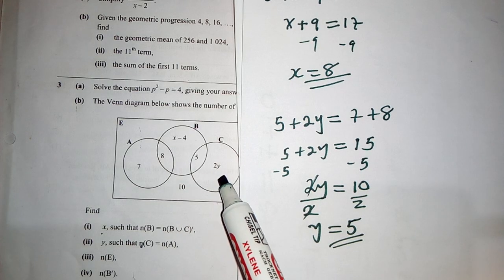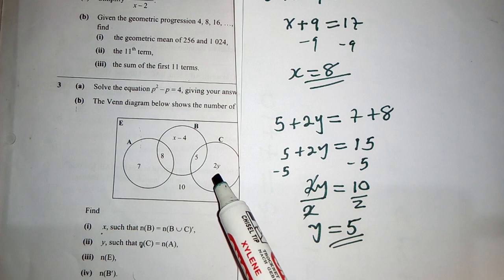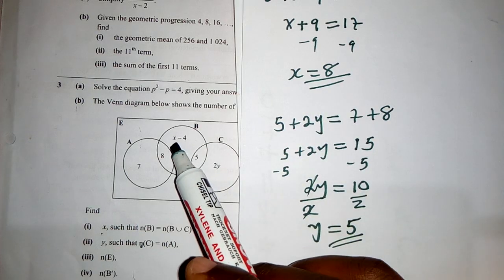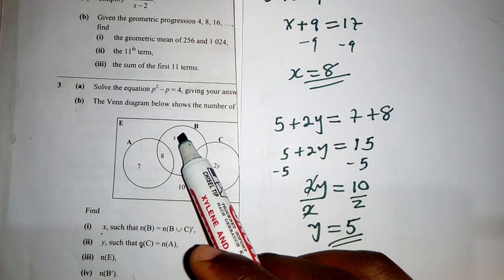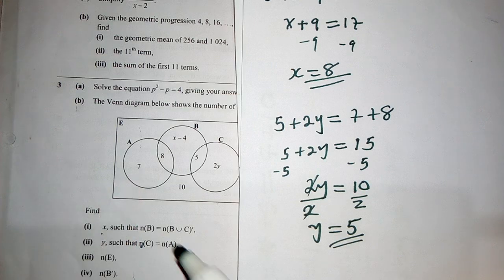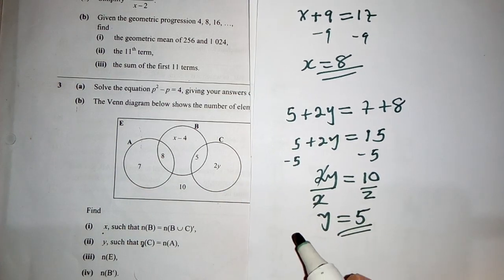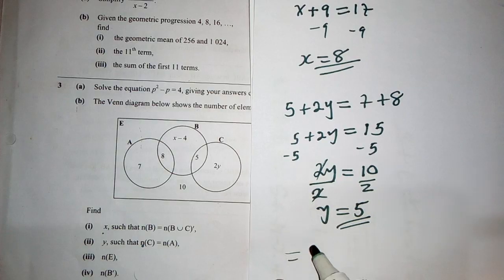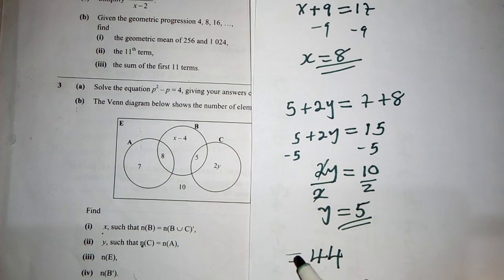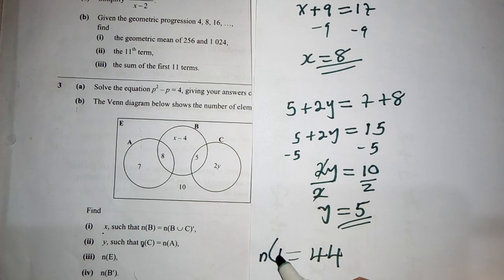And then where there is y here, we put 5, because the value of y is 5. And then where there is x, we put 8, we subtract, it would be 4 here, it would be 10. And then we add everything, so the number of elements in E will be equal to 44. That's the number of elements in E.